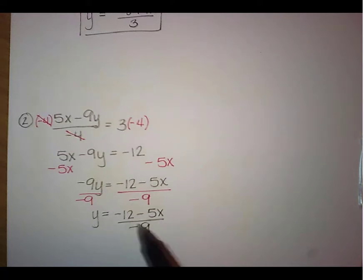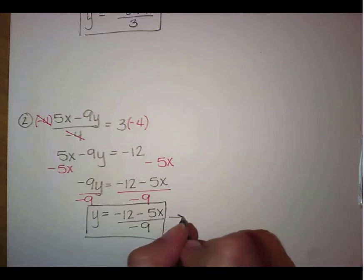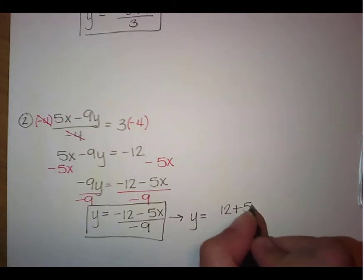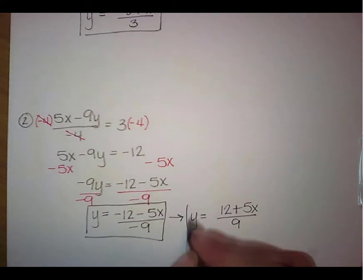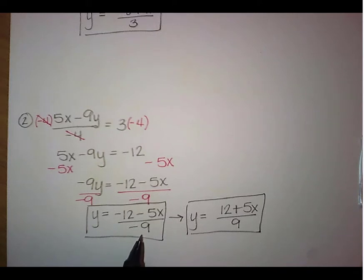So I know 12 and 9 are divisible by 3, but 5 is not. So this would be as simple as we could make that. The only thing you could do if you didn't like all those negatives, again, since all three of them are negative, you could rewrite it with them all being positive. Basically you're dividing out that negative. So either one of these where we have the negative 12, the negative 5x over the negative 9, or if you don't like that, 12 plus 5x over 9 are both correct. So now let's look at our last your turn problem.